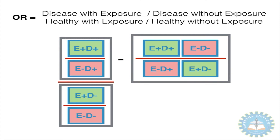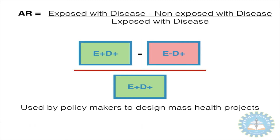The next parameter used to determine causation is the attributable risk. This is the difference between the occurrence of disease among exposed versus the occurrence of disease among non-exposed. It is used by policy makers to design mass health projects. These parameters may appear confusing because they are closely related to one another; however, when you logically try to distinguish them, they become easier to remember.